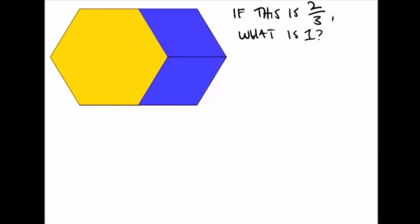I'm looking at a region here. It's got the yellow and the blue made up of typical pattern blocks. And I'm going to ask this. If this region represents two-thirds, then what would represent one?